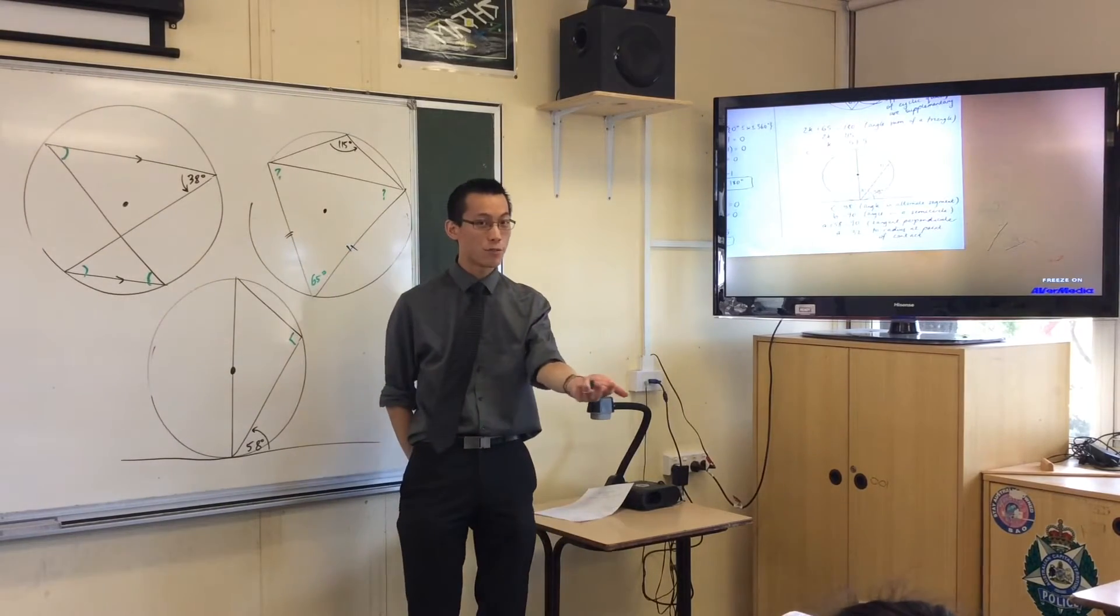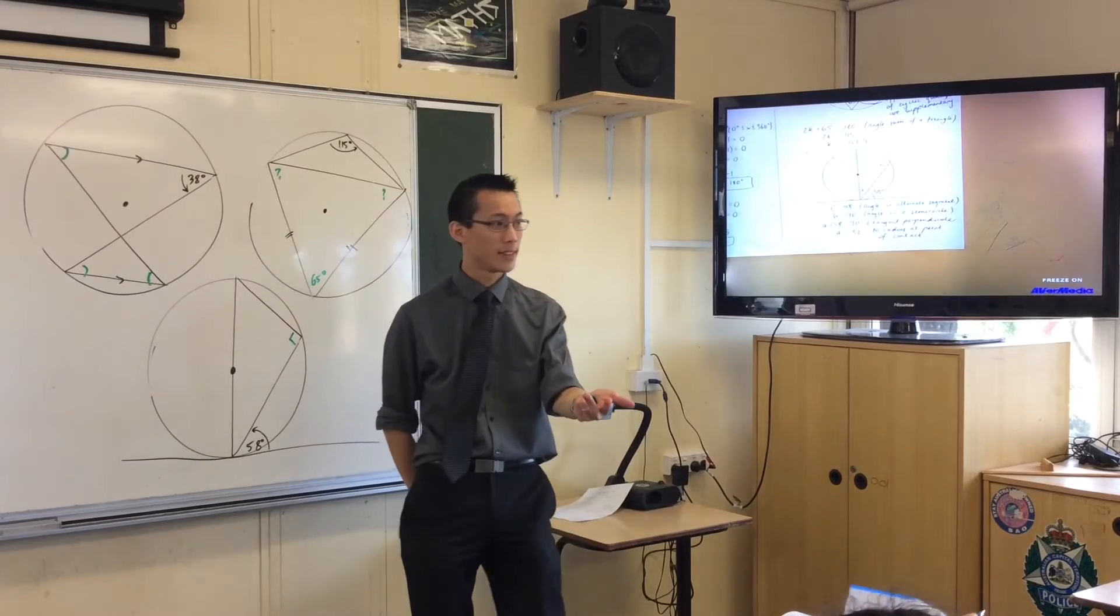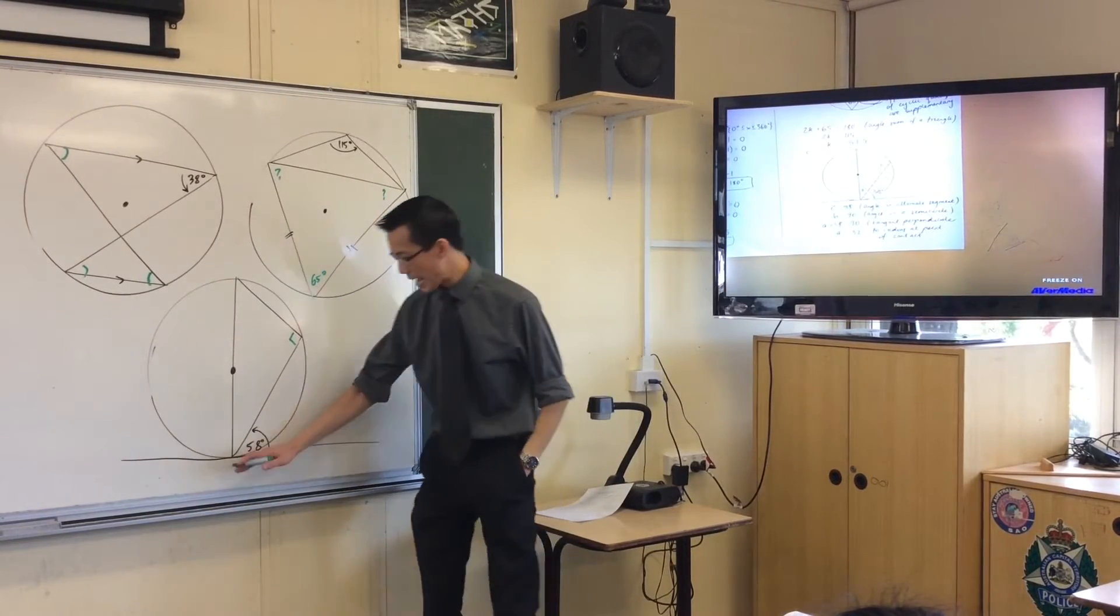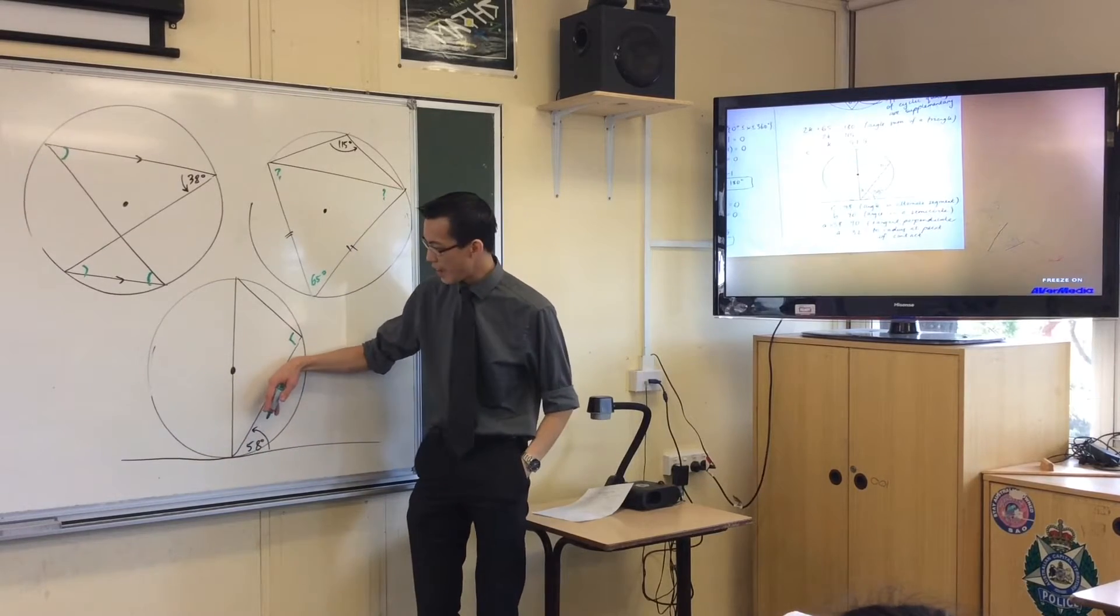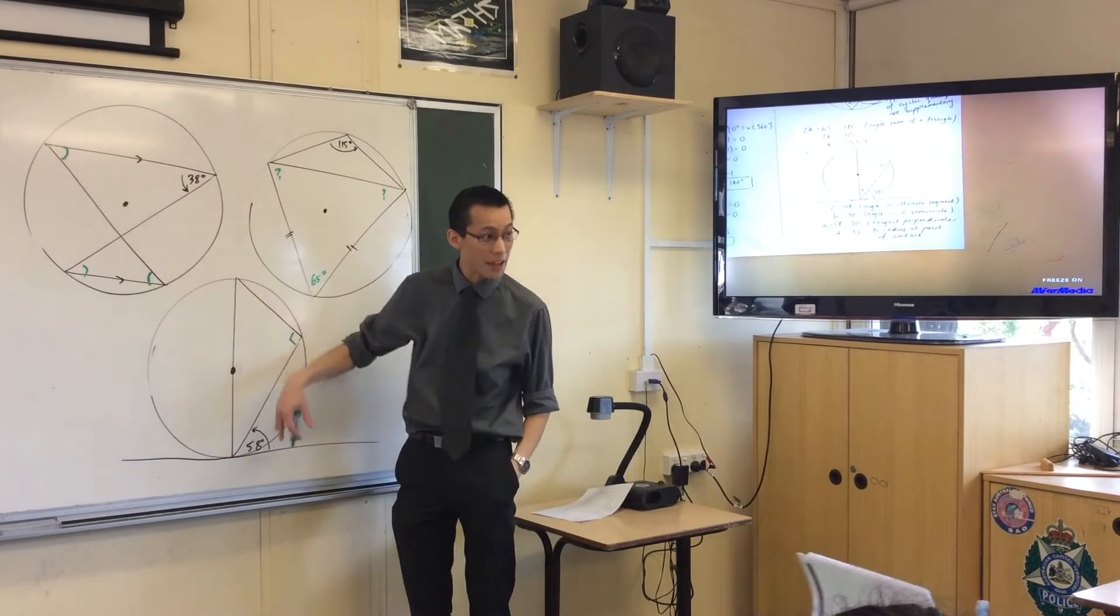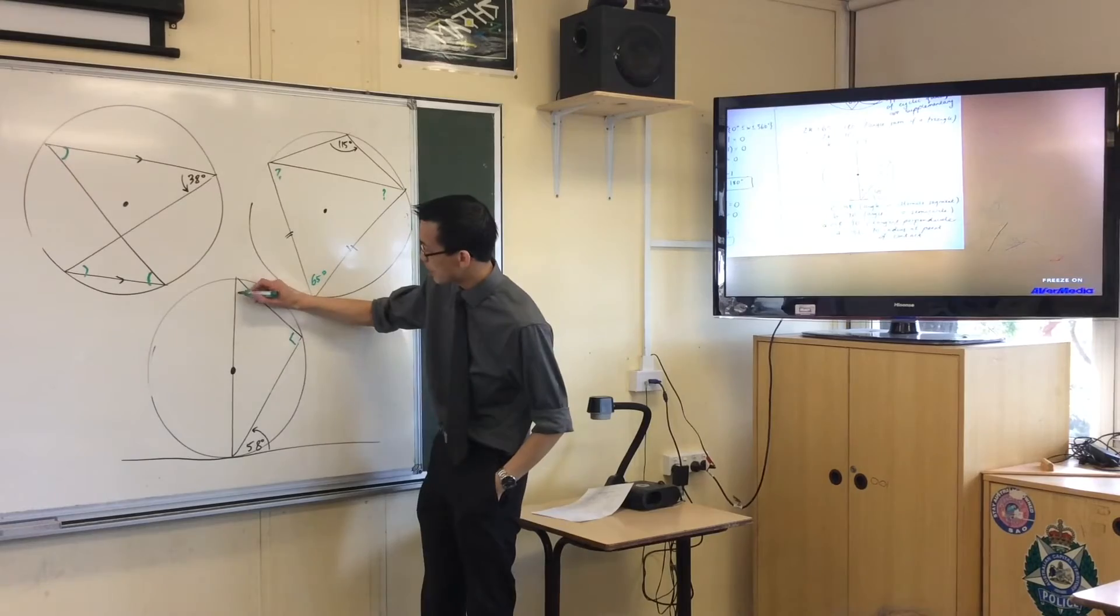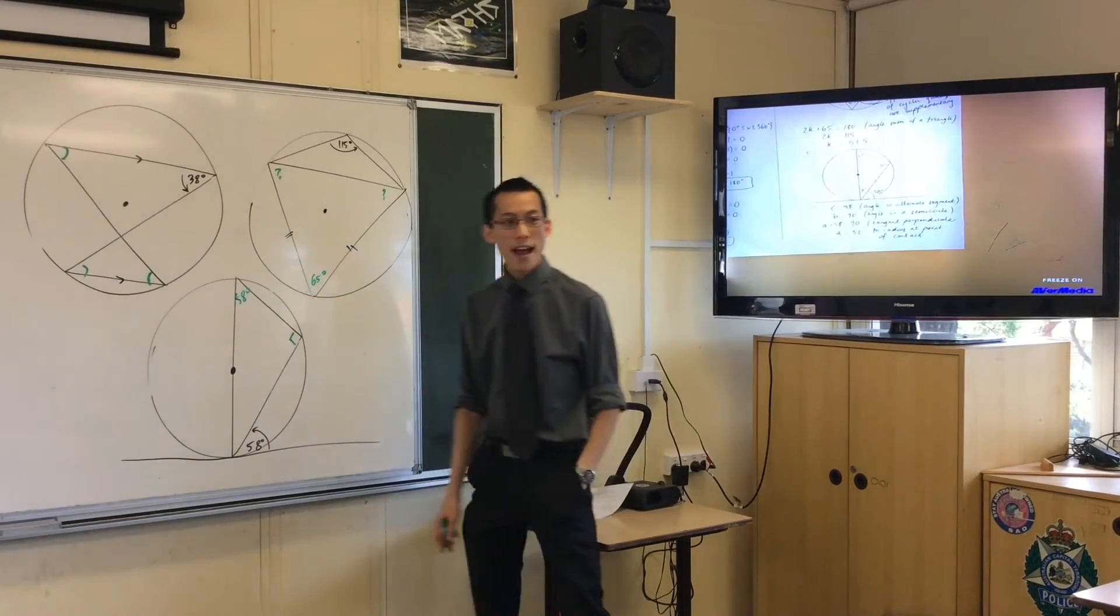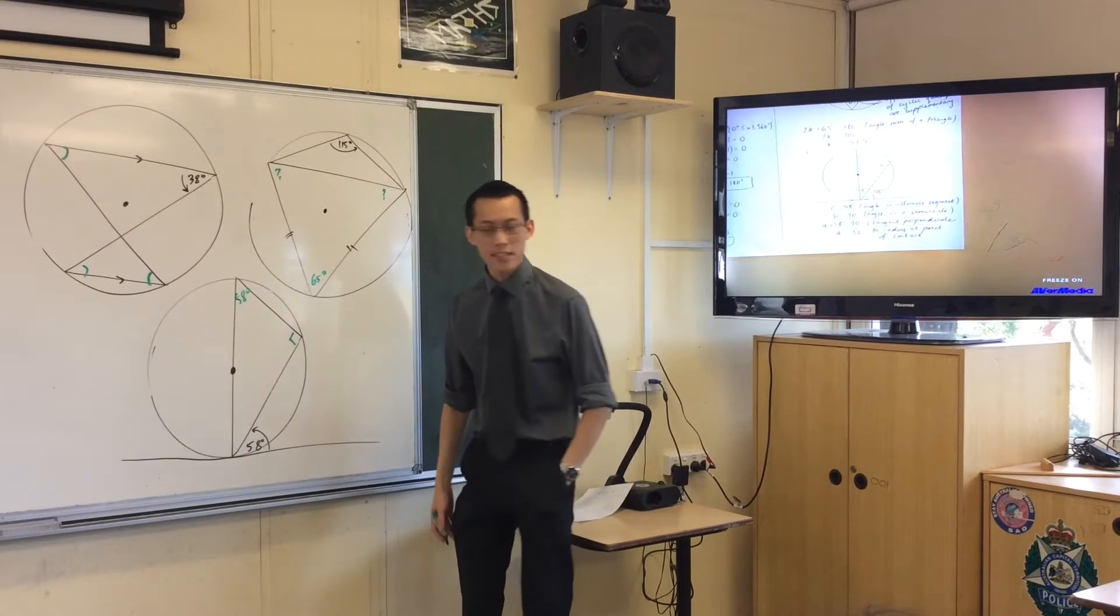Year 12, stay with me. What else can I do? Where else would you go? Alternate segment here. Okay, I can say, here, this is the angle between the tangent and the chord. And so the angle in the alternate segment that's formed by that chord must be the same as the angle between the tangent and the chord.